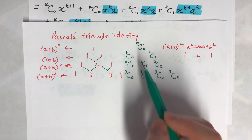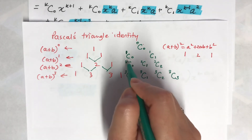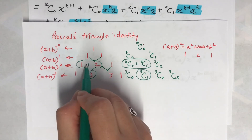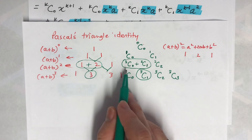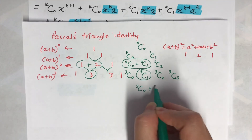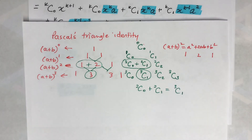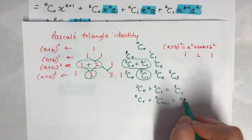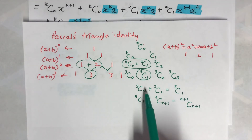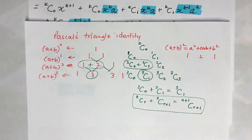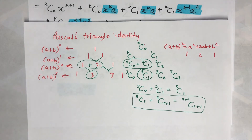So in Pascal's Triangle, when we add two adjacent entries we get the one below. For example: 2_C_0 plus 2_C_1 equals 3_C_1. We can make a general formula from this: n_C_r + n_C_(r+1) = (n+1)_C_(r+1). Here 2 is n — it's one term behind — and this is what we call Pascal's Triangle Identity, and that's what we're going to use.